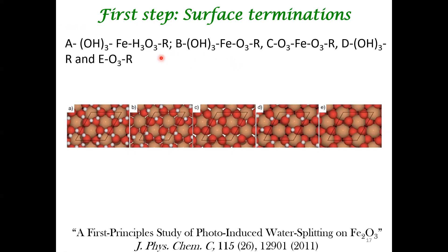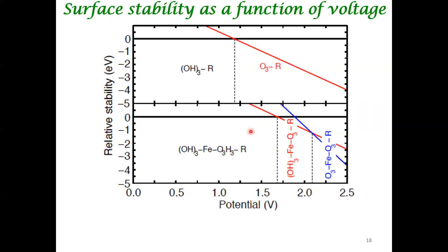We wanted to look at what kind of surface termination exists — there are many possible terminations, labeled A, B, and so on. We also asked about the stability of different surfaces at different potentials. For example, a particular surface termination can dissociate into another termination giving off three protons and three electrons. The free energy of the resulting species depends on pH and the applied potential.